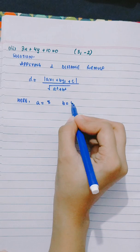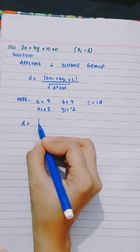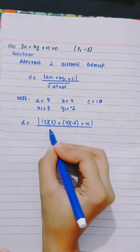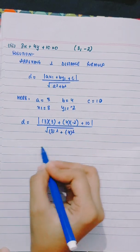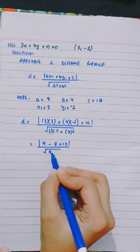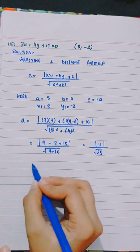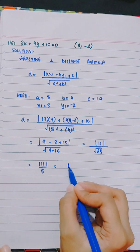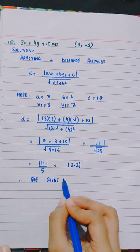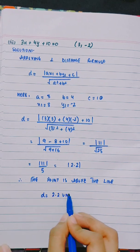Here a is 3, b is 4, c is 10, x₁ is 3, and y₁ is minus 2. So d equals mod of (3 into 3) plus (4 into minus 2) plus 10, divided by the square root of 3² plus 4², which gives mod of (9 minus 8 plus 10) divided by the square root of 25, that is 11 divided by 5, giving mod of 2.2. Therefore the point is above the line and d equals 2.2 units.